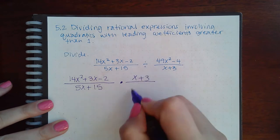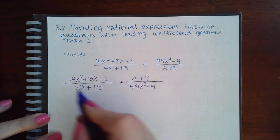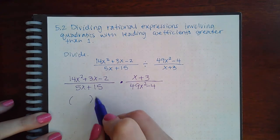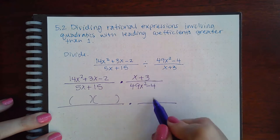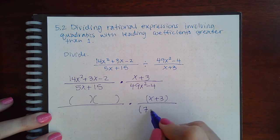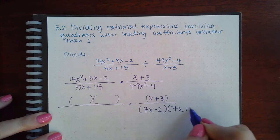Then you take the reciprocal of the second fraction. Then you have to factor this numerator and this numerator cannot be factored so it'll stay like that. This I can factor pretty easily: 7x minus 2, 7x plus 2.